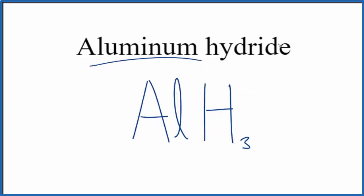So when you have a metal, and then you have this hydride, this hydrogen here, it's going to have a 1-minus ionic charge.